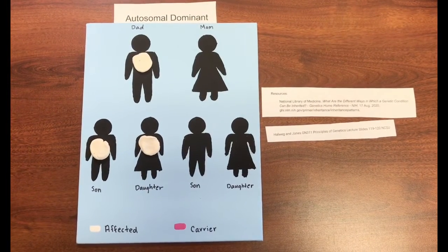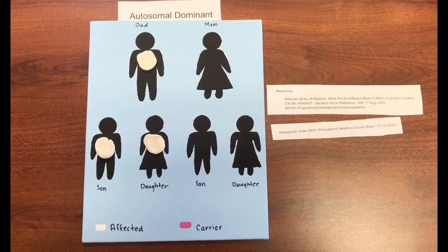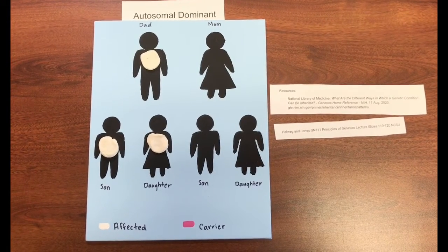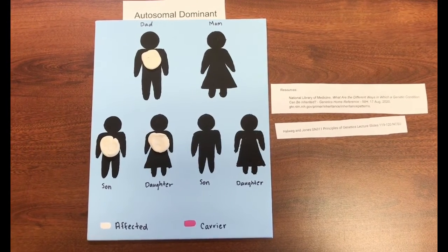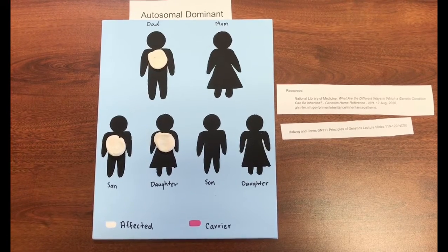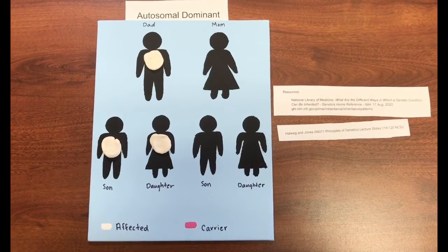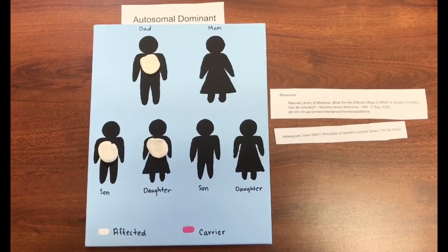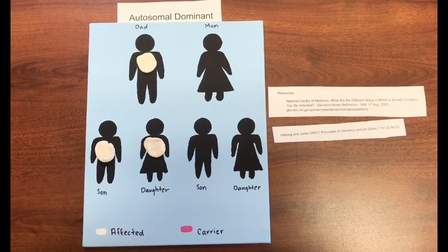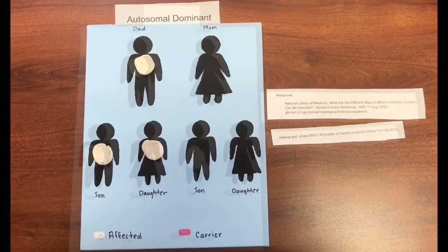Like autosomal recessive, autosomal dominant does not depend on the gender of the child. It appears in both sexes equally, does not skip generations, and the affected offspring must have an affected parent. An example is Huntington disease. Here, the father is affected, and so two children will also be affected.